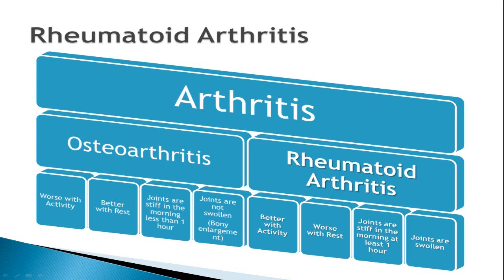The way rheumatoid arthritis presents is also different from osteoarthritis. With osteoarthritis, the more you use the joints the worse they feel, whereas with rheumatoid arthritis they actually feel better with activity and worse with rest. With rheumatoid arthritis, morning time is particularly difficult — joints are typically described as being stiff for at least an hour, whereas with osteoarthritis any stiffness is usually less than 30 minutes. Rheumatoid arthritis also produces a boggy swelling in the joints themselves, which can be obvious or subtle and really takes an expert to detect.